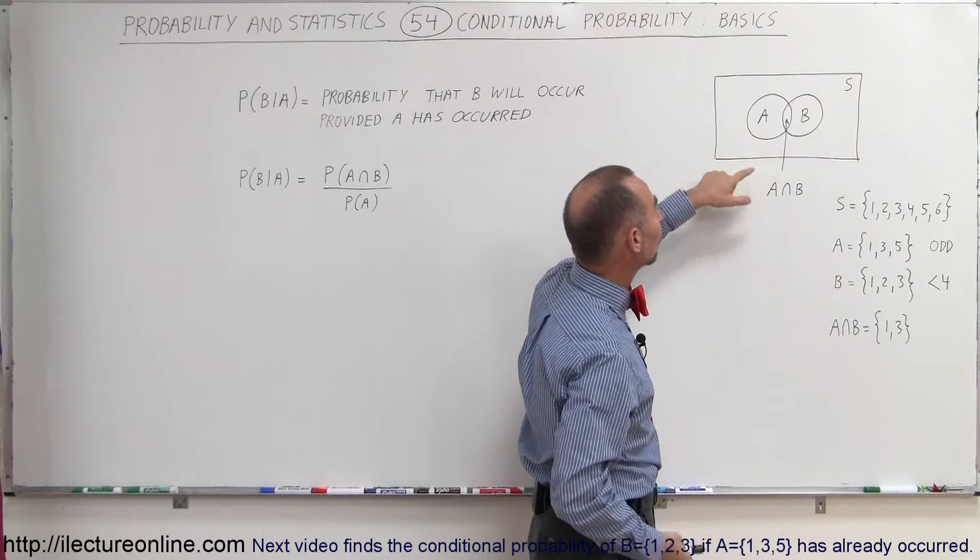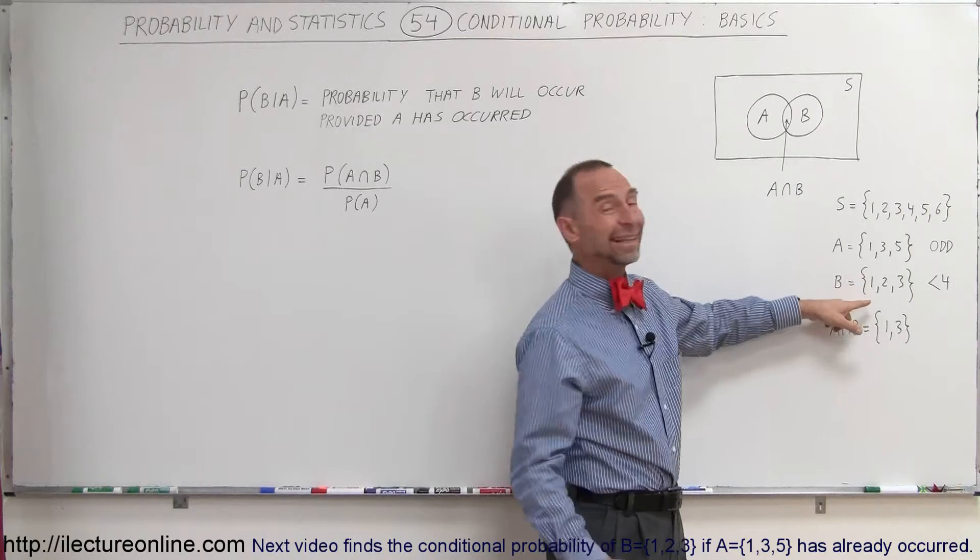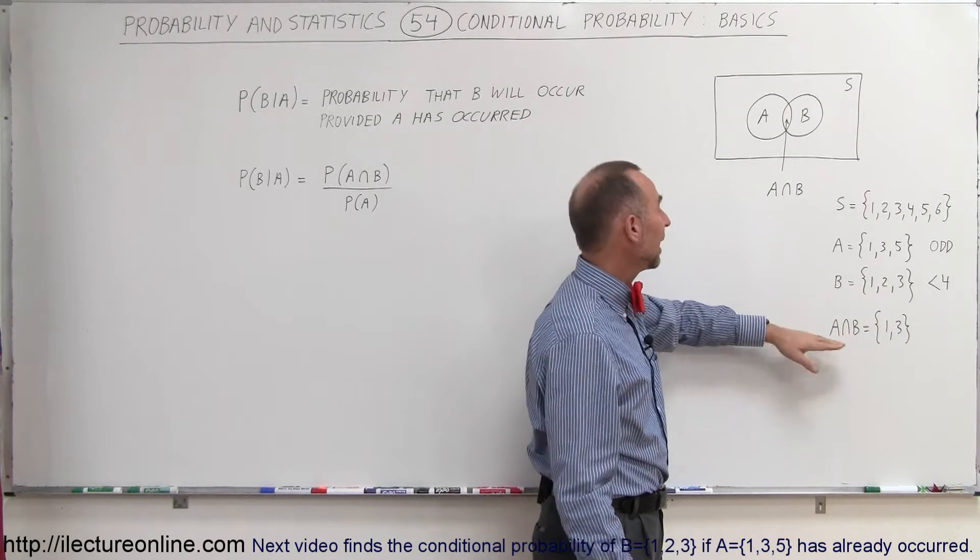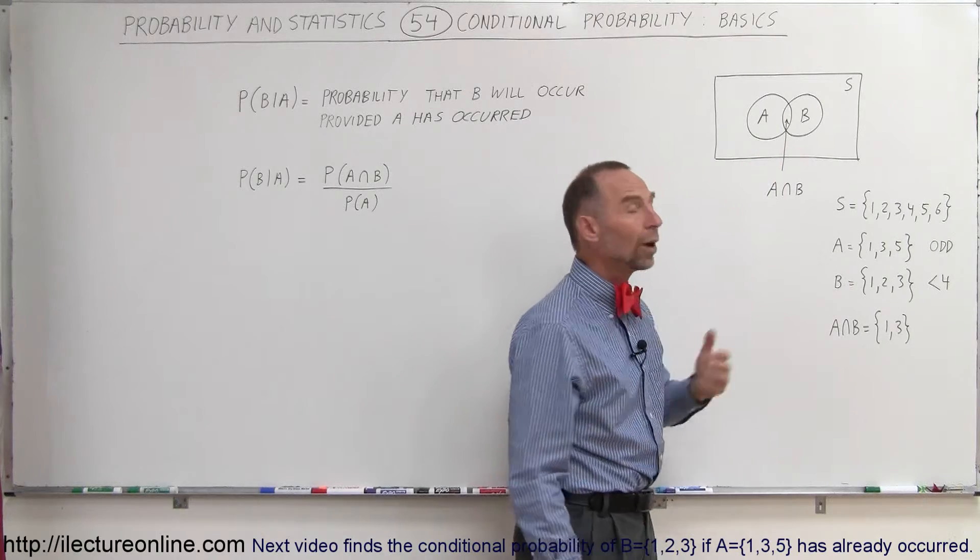Now we can have a visualization here. A is 1, 3, and 5, the odd numbers. B is anything less than 4: 1, 2, 3. And the intersection between A and B is what is common between the two, 1 and 3.